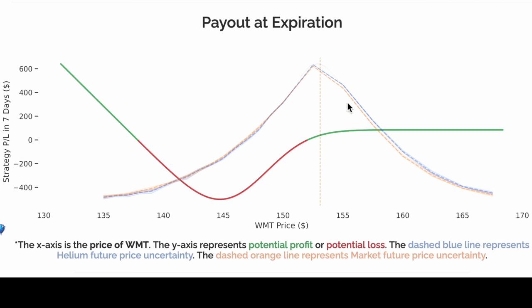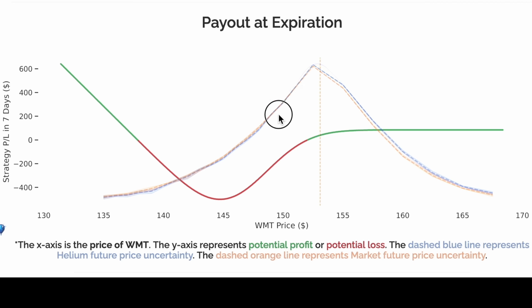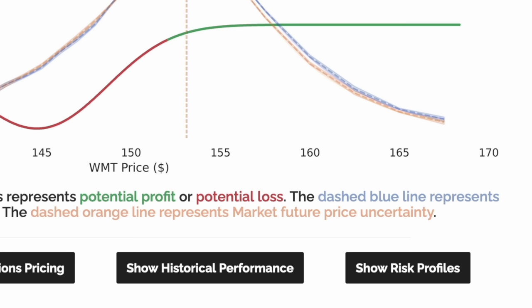The dotted blue and orange lines represent the probability estimates of Helium and the market on the future price in 7 days. Most of the probability mass is at the center of this graph; higher values represent a higher likelihood of occurring. This is Helium's most important graph because it shows how potential futures will affect this trade's P&L, as well as the respective probabilities of those events happening. Let's dive deeper into the risks of this trade.